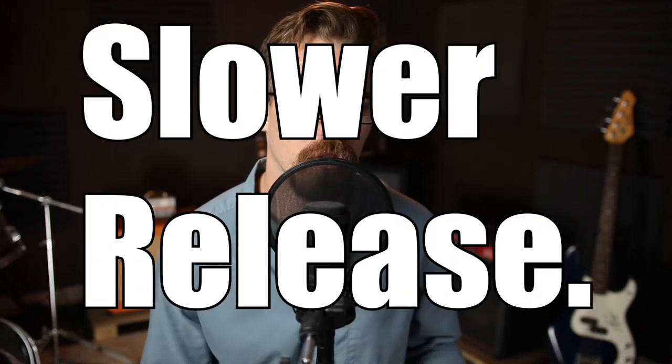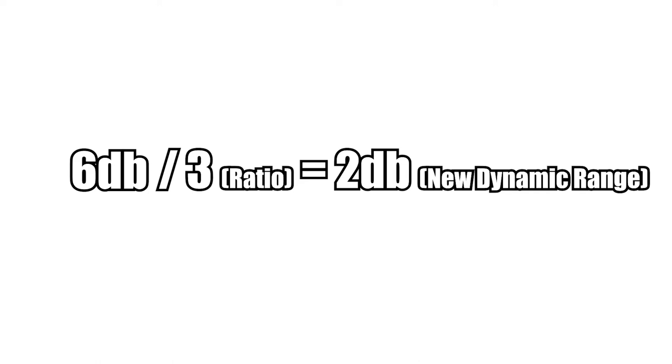The attack and release are kind of up to you. I tend to go with a quicker attack and a slightly slower release, but you can play around with those parameters and see what works for your audio. For makeup gain, you should be able to tell how much dB you want to bring back by using that formula — take your dynamic range, divide it by your ratio, and use that.